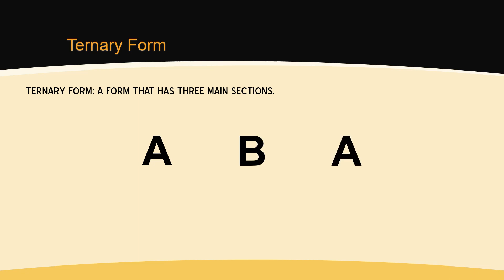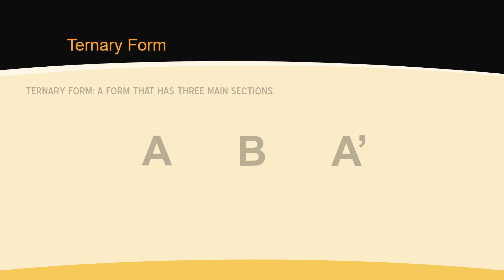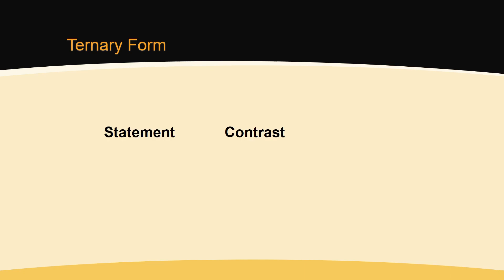Depending on how much liberty is taken with the restatement of the A section, the formal diagram could be A, B, A'. The discussion of ternary form affords us an opportunity to discuss an important concept of musical composition: the idea of statement, contrast, restatement.